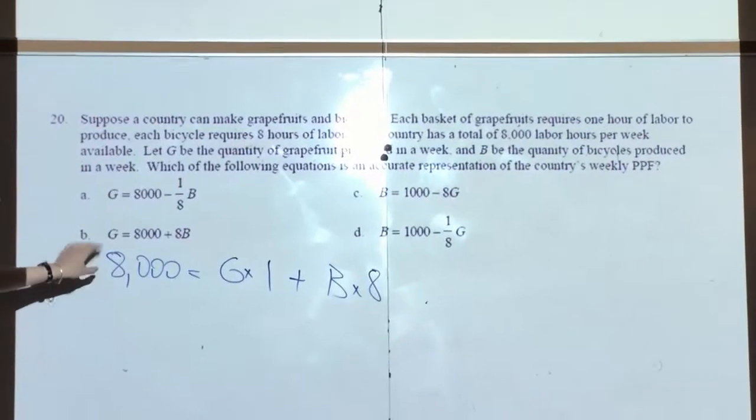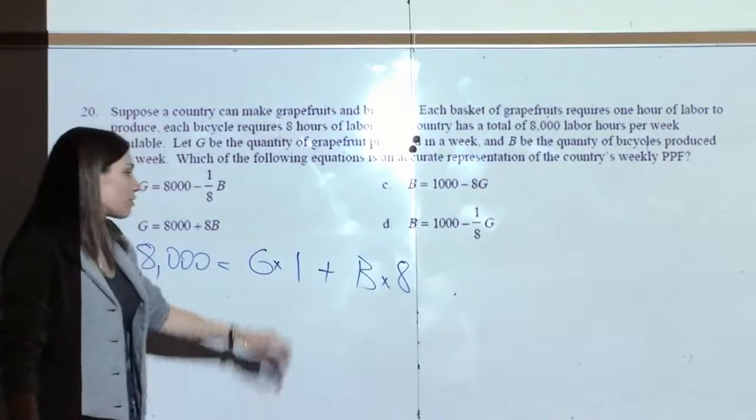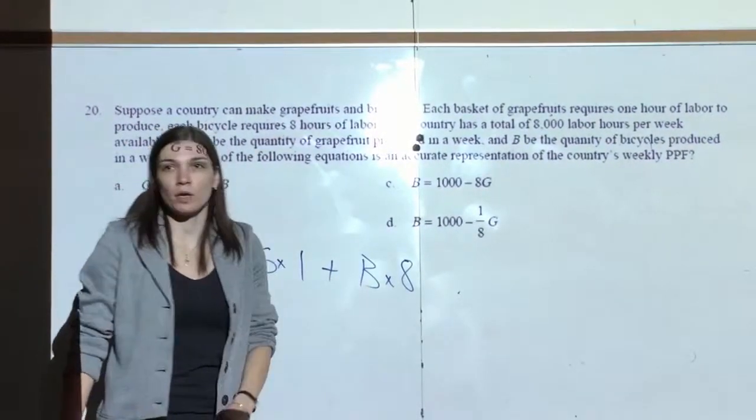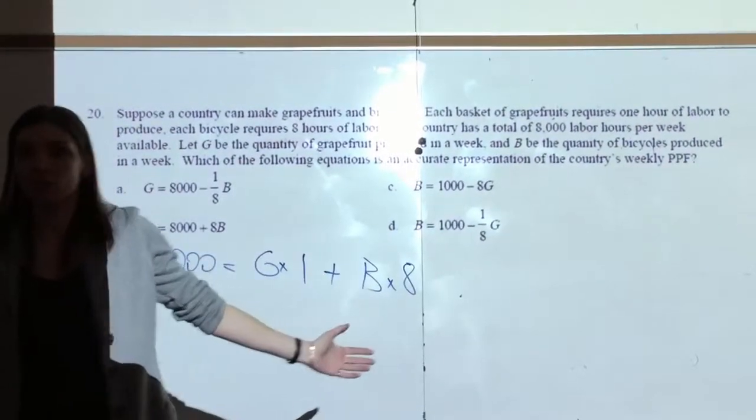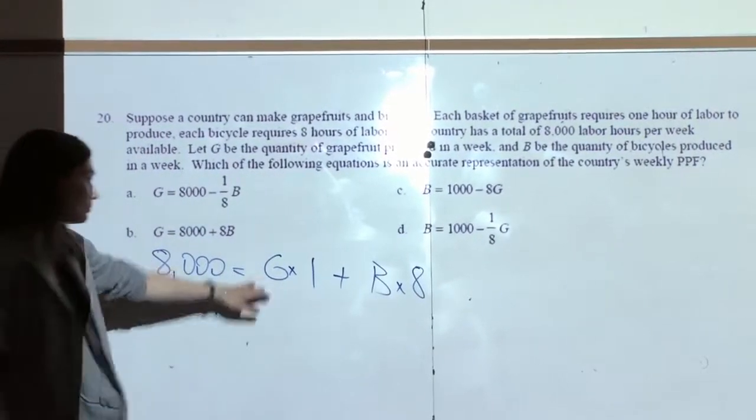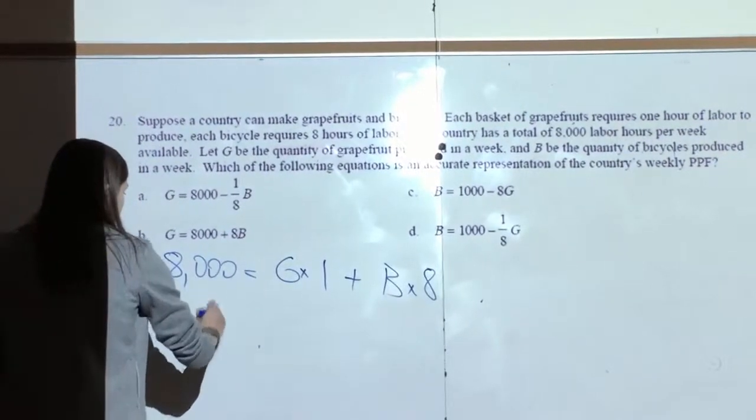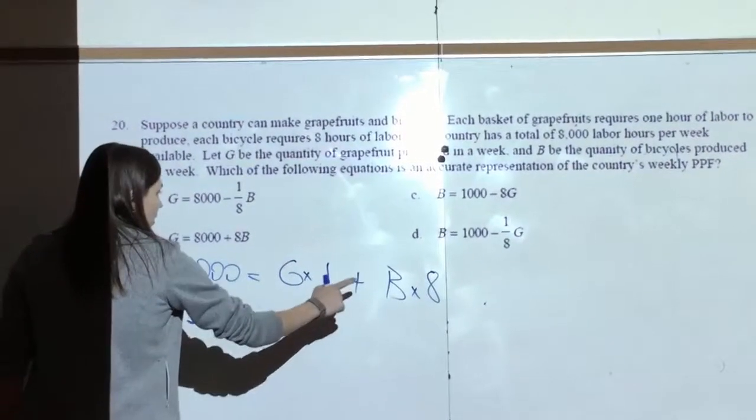So, for 8,000 hours, I can either produce grapefruits or bicycles. Grapefruits take one hour, bicycles take eight hours. From this equation, we can solve for G or B and see which one fits. Let's solve for G. What becomes G equals 8,000 minus 8B.